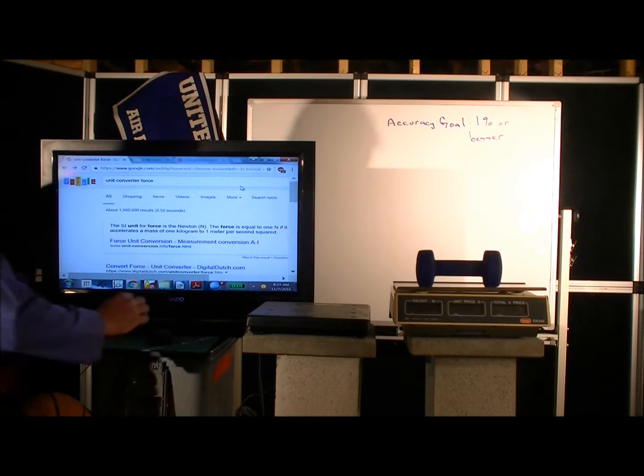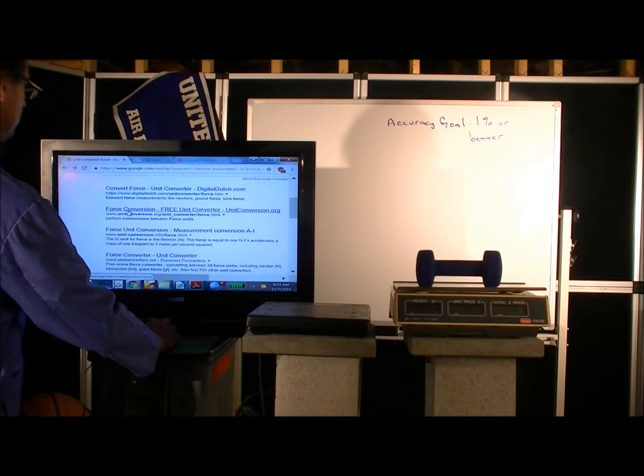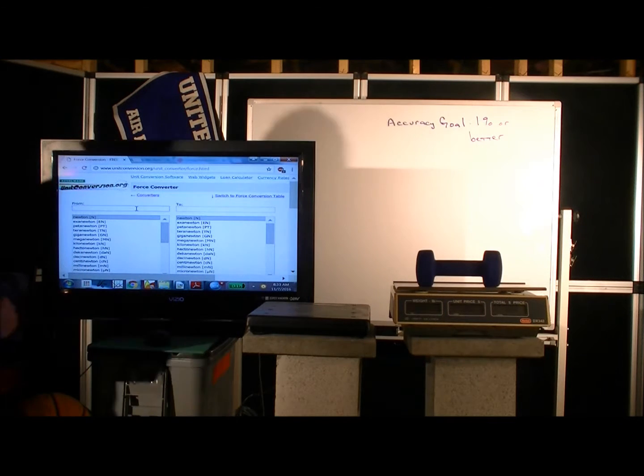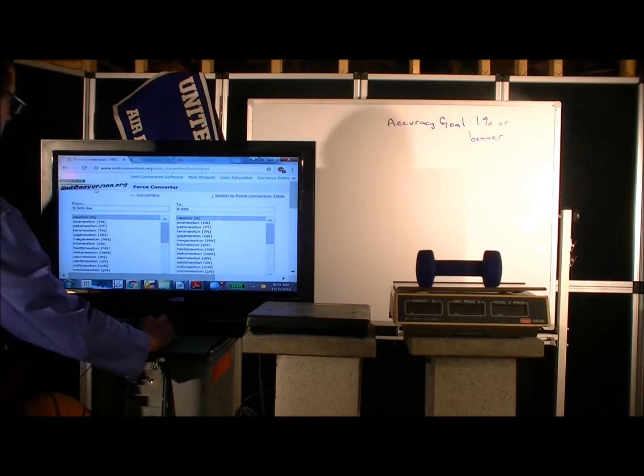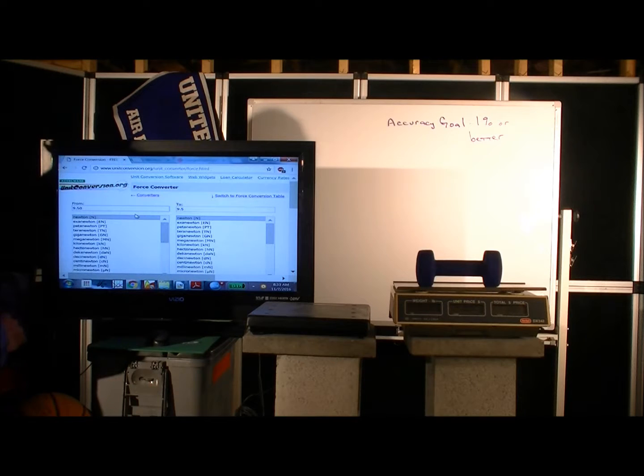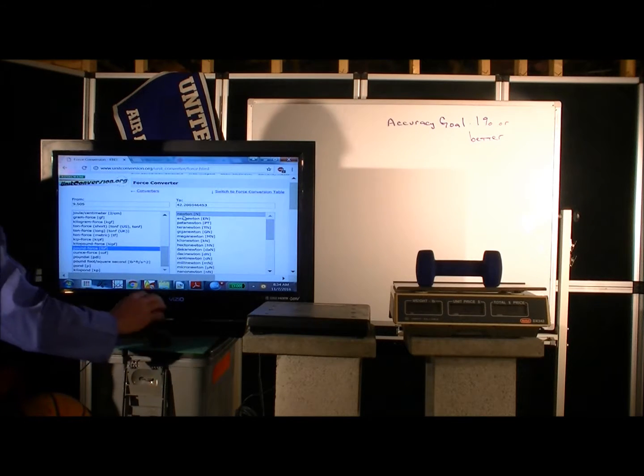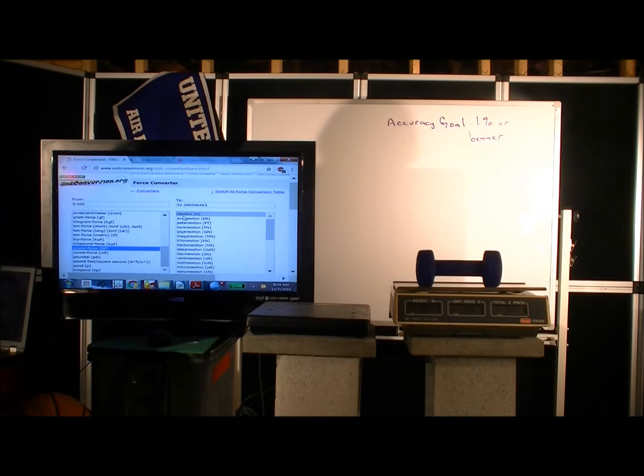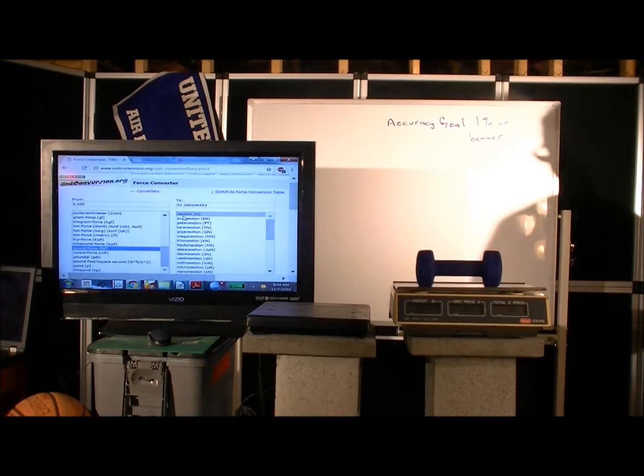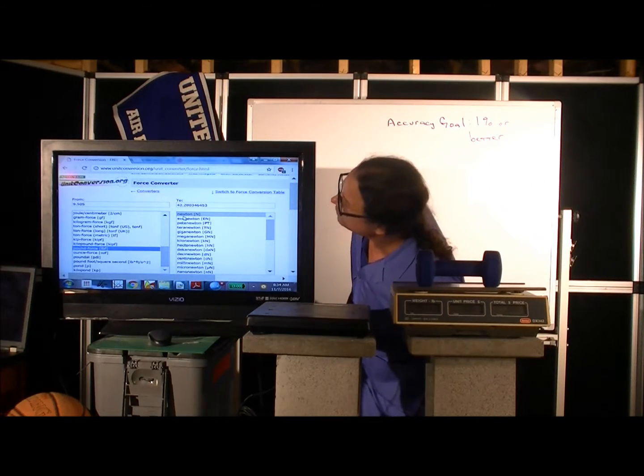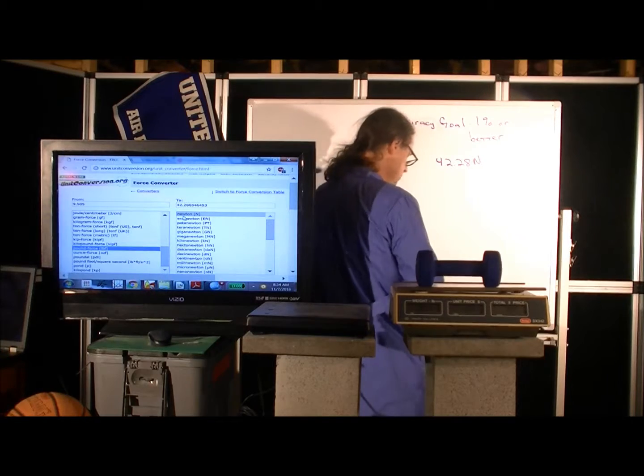So we come to Google and we Google up a unit converter for force, and it gives us several options. And this is unitconversion.org, which is one I've used a lot. And so let's just convert 9.505 pounds. Let's see, it might want us to scroll down and select pounds here. 9.505, scroll down to pounds, converted to Newtons. So 9.505 pounds is 42.28 Newtons. So let's just write this down because we're going to use this. See what the number was again: 42.28 Newtons. We're going to use this to double check the accuracy of our force plate.